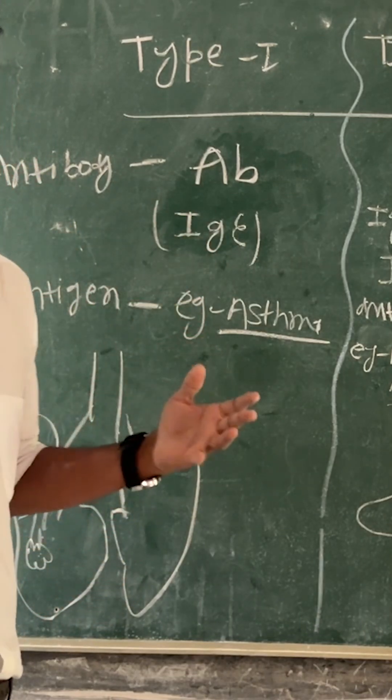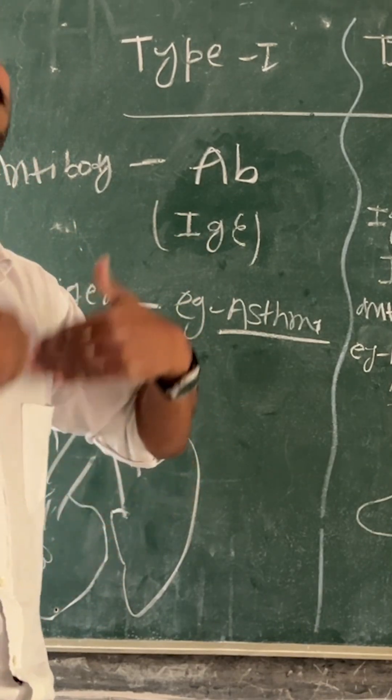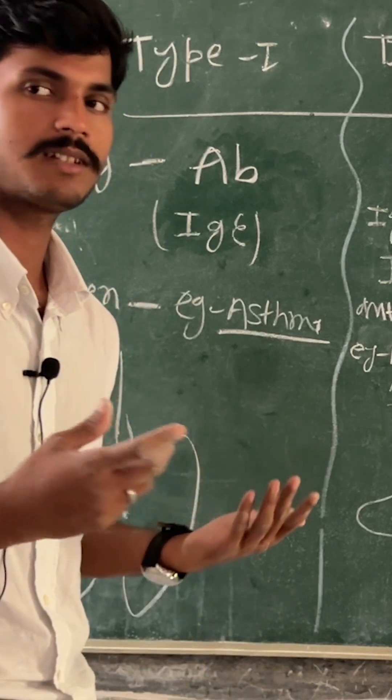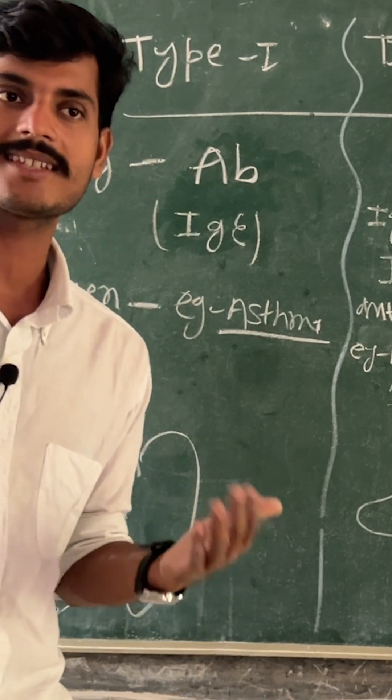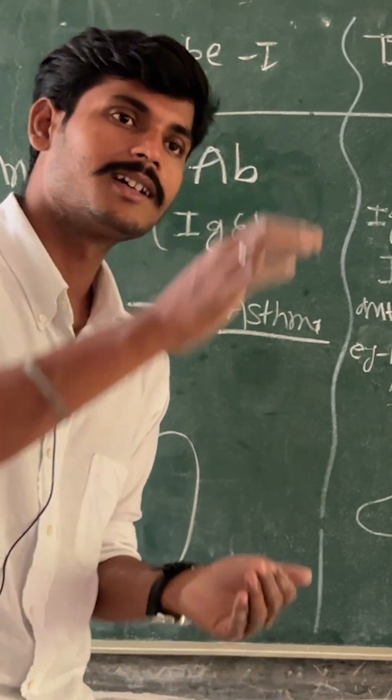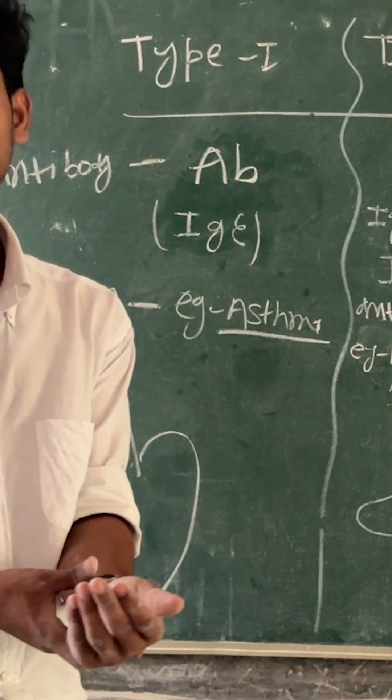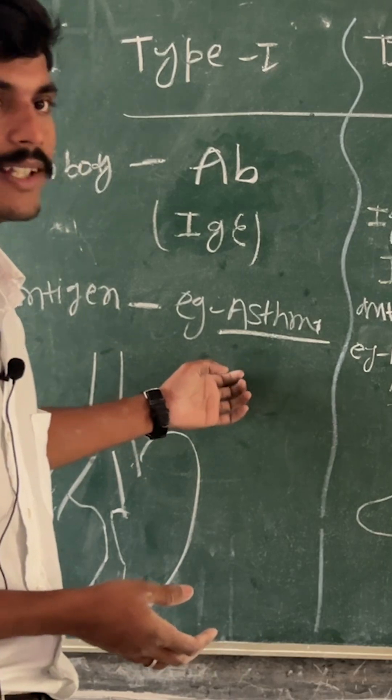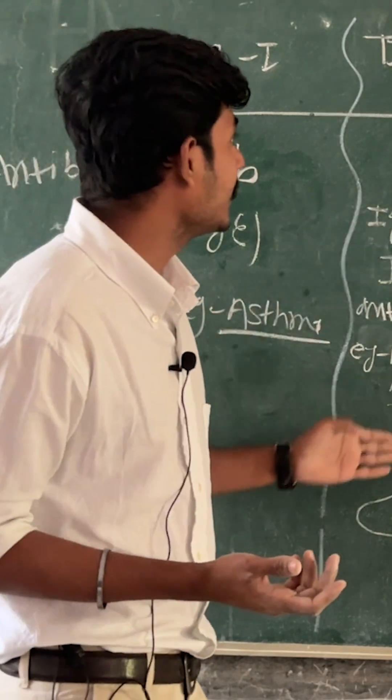When antigen-antibody react first time, anti-pollen or any antigen-triggering substance, against that the antibody develops in our body. In the next exposure, there will be massive destruction and symptoms. A common example is asthma. Then in Type 2...